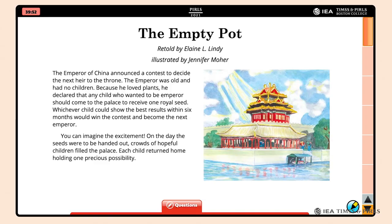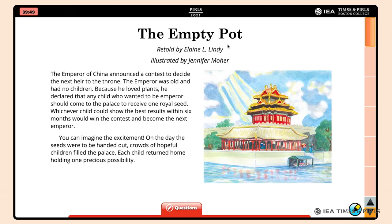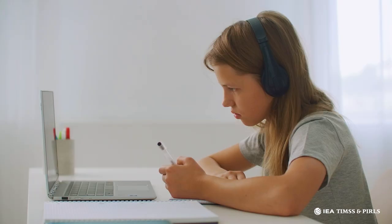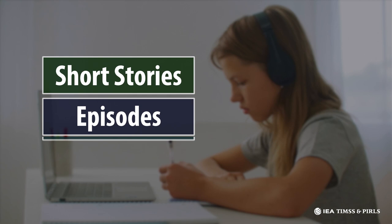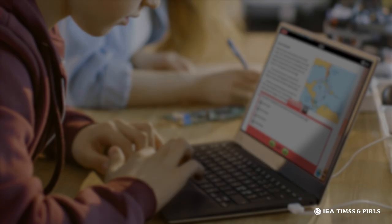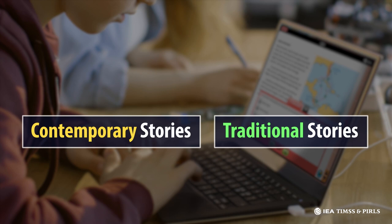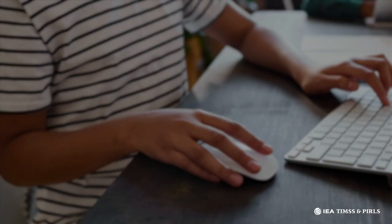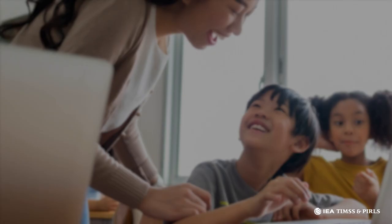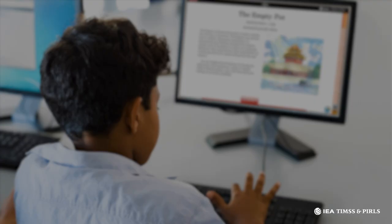The Empty Pot passage is an example of a literary text of medium difficulty. The literary texts were complete short stories, or episodes, accompanied by supportive illustrations. The texts include contemporary and traditional stories with one or two main characters, a plot with one or two central events, and an overall theme or message.